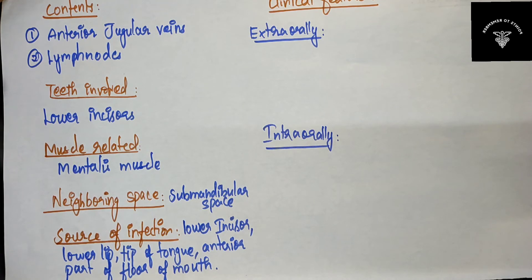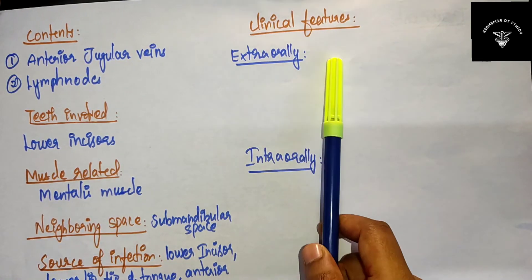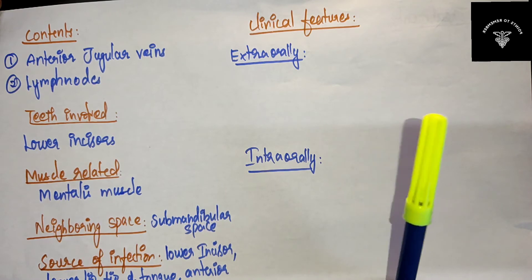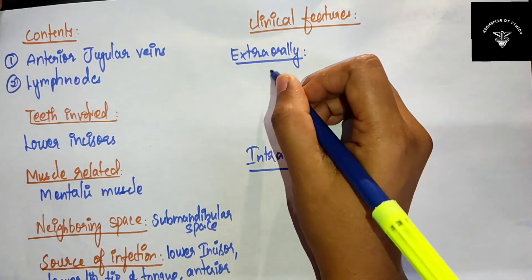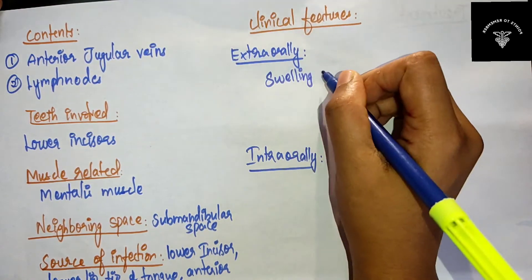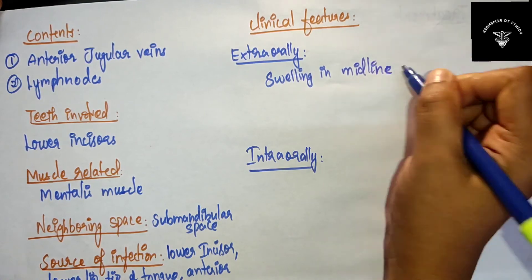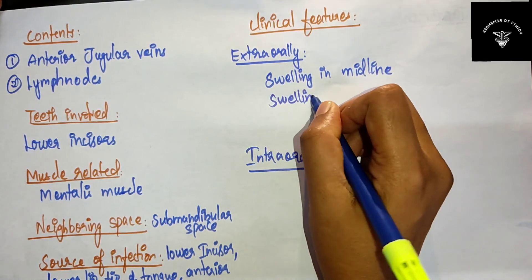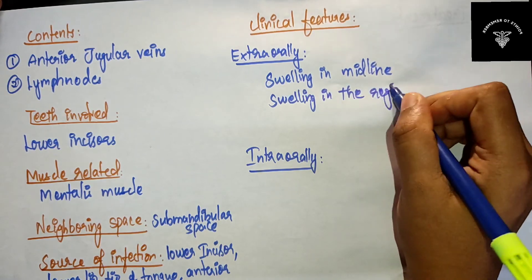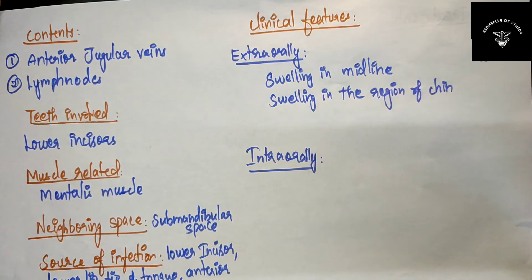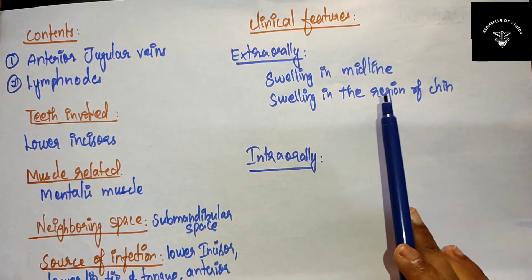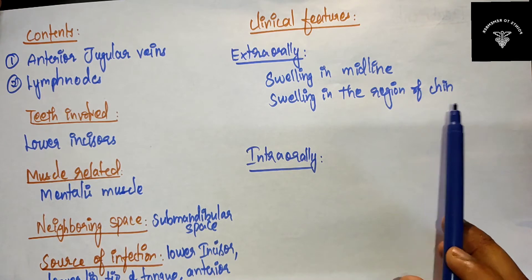Let's move on to the clinical features of submental space infection — both extraoral and intraoral. Extraorally, there will be swelling in the midline and swelling in the region of the chin and the region just beneath it.